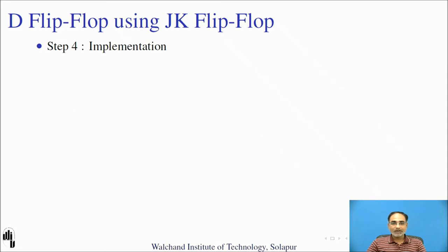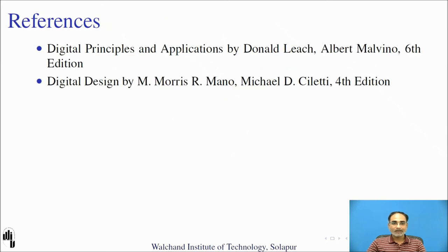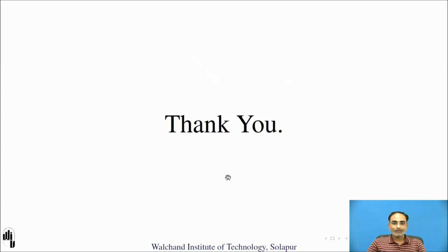Finally, we implement the hardware. Drawing the final logic diagram using the expressions derived — J = D and K = D' — you require a JK flip-flop along with an inverter connected between the D input and the K terminal, while J is connected directly to D. This is how you design a D flip-flop using a JK flip-flop. These are the references you can go through. Thank you.